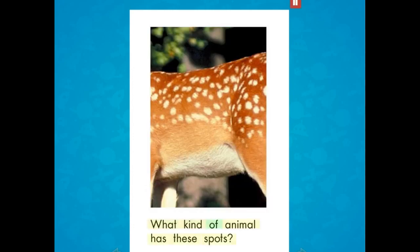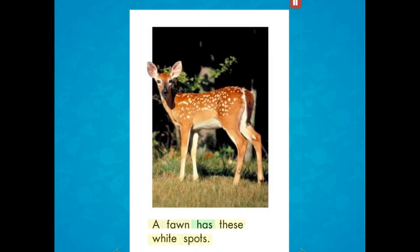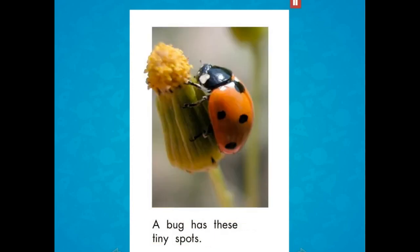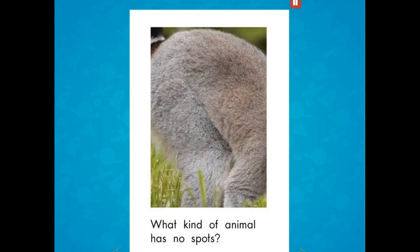What kind of animal has these spots? A fawn has these white spots. What kind of animal has no spots?